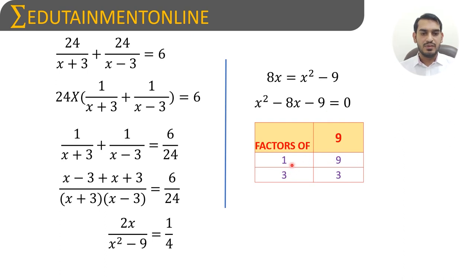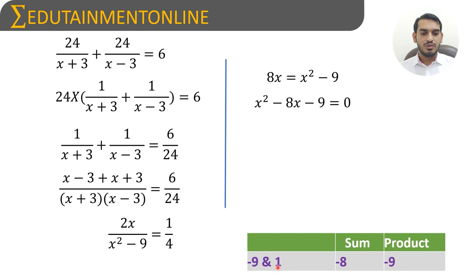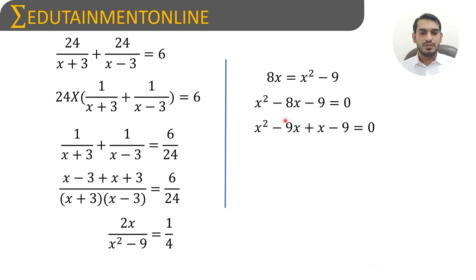The factor pairs of 9 are: 1 and 9 (product 9), and 3 and 3 (product 9). Choosing the pair 1 and 9: minus 9 plus 1 equals minus 8, satisfying the sum condition, and minus 9 times 1 equals minus 9, satisfying the product condition. So we replace minus 8x with minus 9x plus x, giving x squared minus 9x plus x minus 9 equals zero.